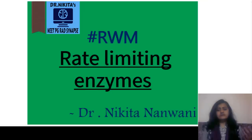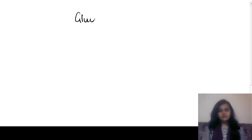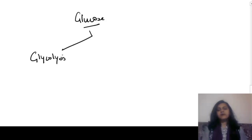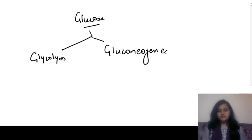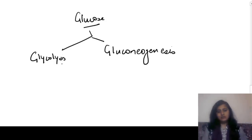Let us see the various rate limiting enzymes that can be asked in the exam. We would see pathways related to glucose — first glycolysis, then gluconeogenesis. That is glucose breakdown and glucose synthesis.